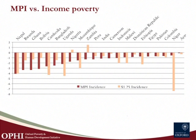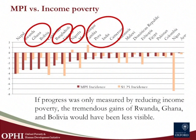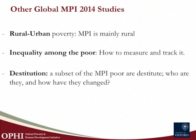We might want to look at how MPI changes in comparison to $1.25 a day measures — if they walk in lockstep, perhaps the same policies reduce them both. We've done this for countries where we can compare two points in time. In some countries like Nepal, the rates of annualized reduction are identical. But in Rwanda, Ghana, Bolivia, Bangladesh, Nigeria, Peru, India, and Cameroon, the rate of reduction of multidimensional poverty was significantly faster than the rate of reduction of income poverty. So if we had only looked at income poverty, we might have missed this.